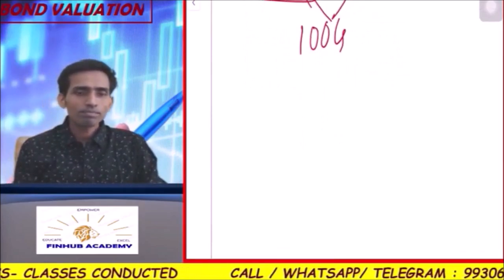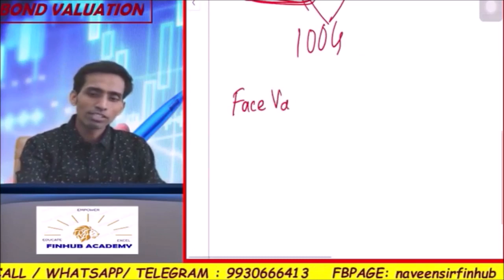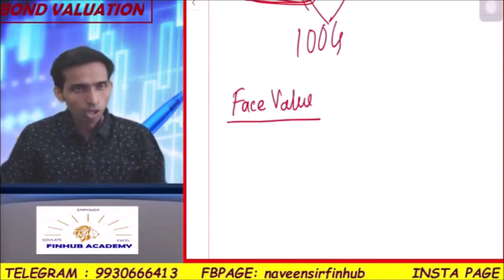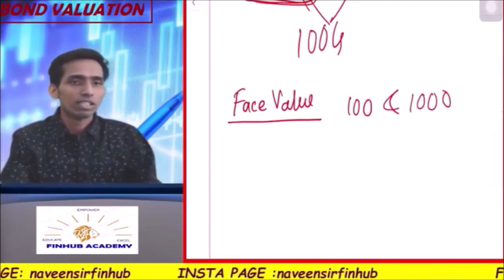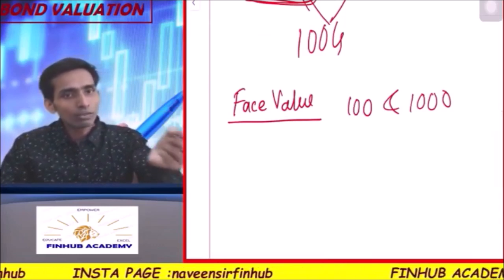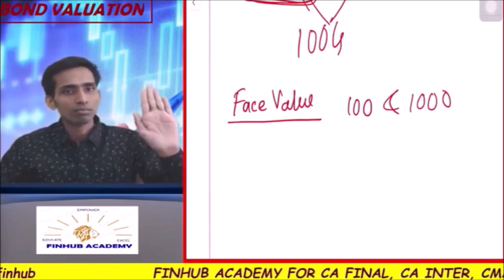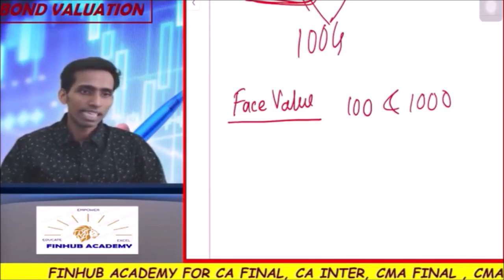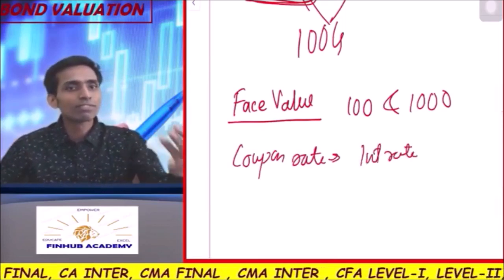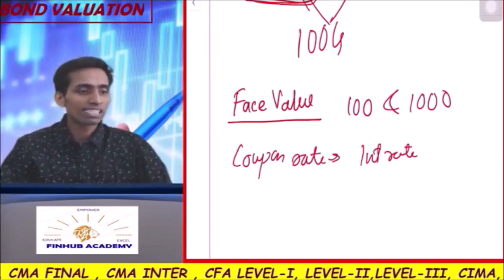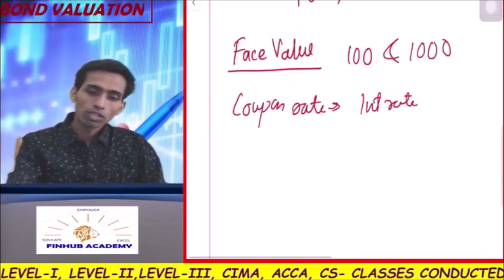Now let's look at important terms in bonds. First is face value, also called nominal value — it will typically be 100 or 1,000. The coupon rate is calculated on the face value, not on the market price. The coupon rate is calculated on what is written on the bond itself. Second term is coupon rate — it is nothing but the interest rate. For example, a debenture at 15% interest: that 15% will now be called the coupon rate.